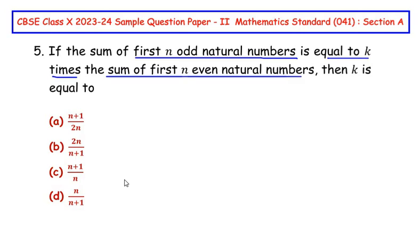If the sum of first n odd natural numbers, I'm going to consider n equals 3. That is, we're going to consider first three odd numbers and similarly take the sum of first three even natural numbers.